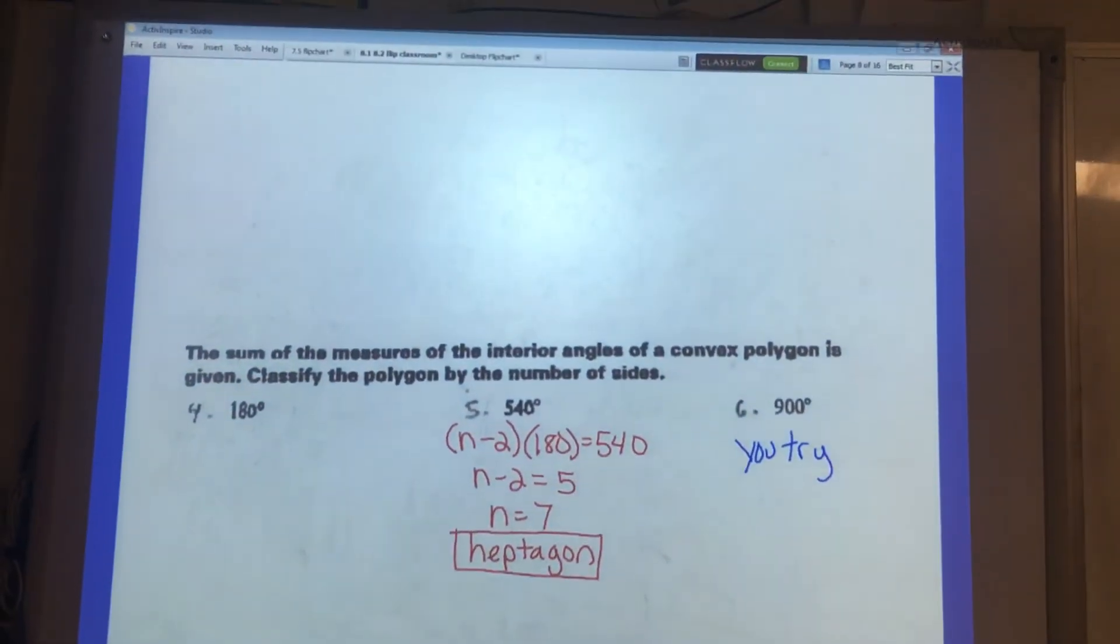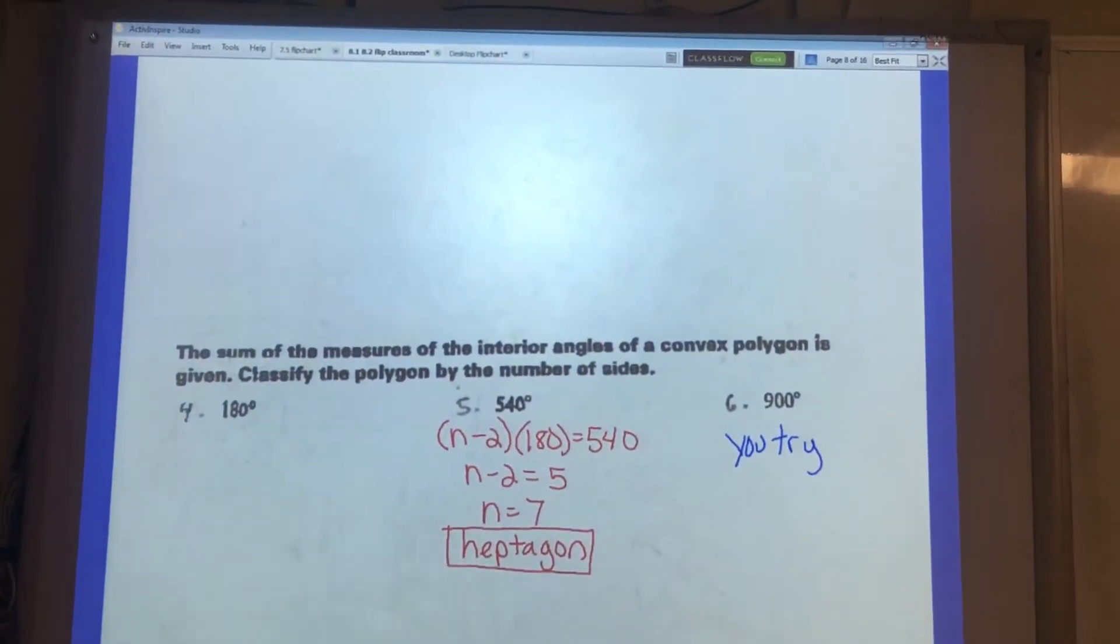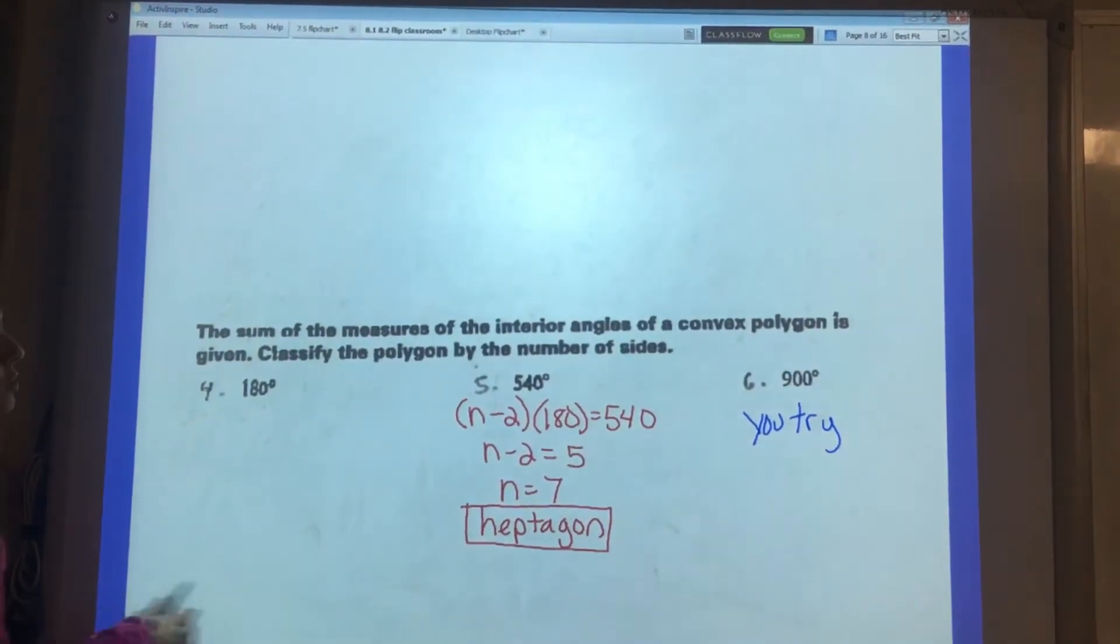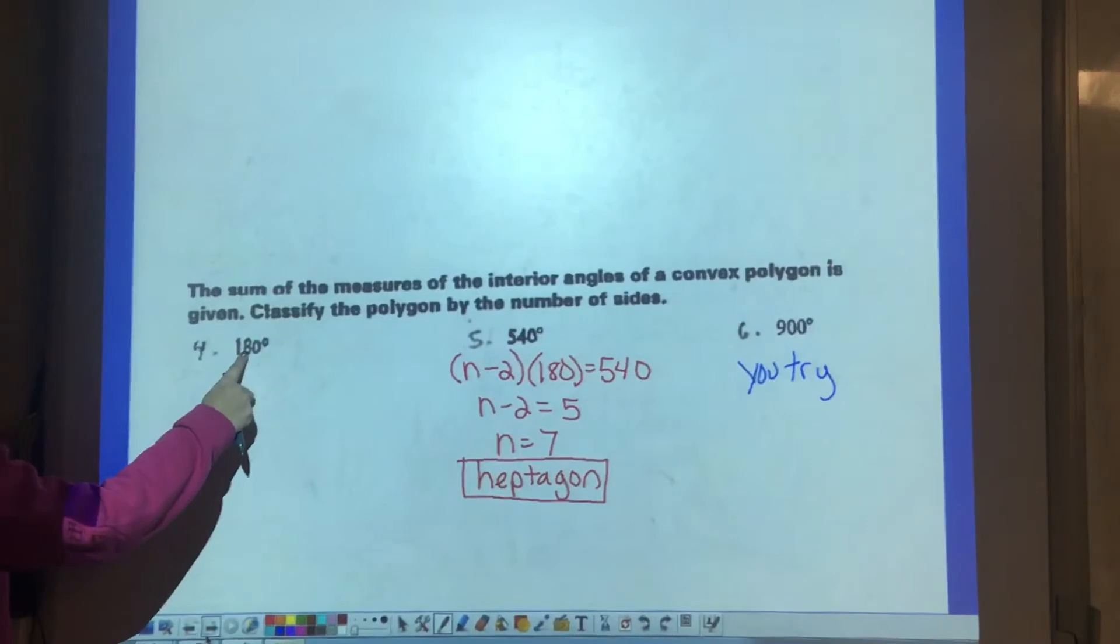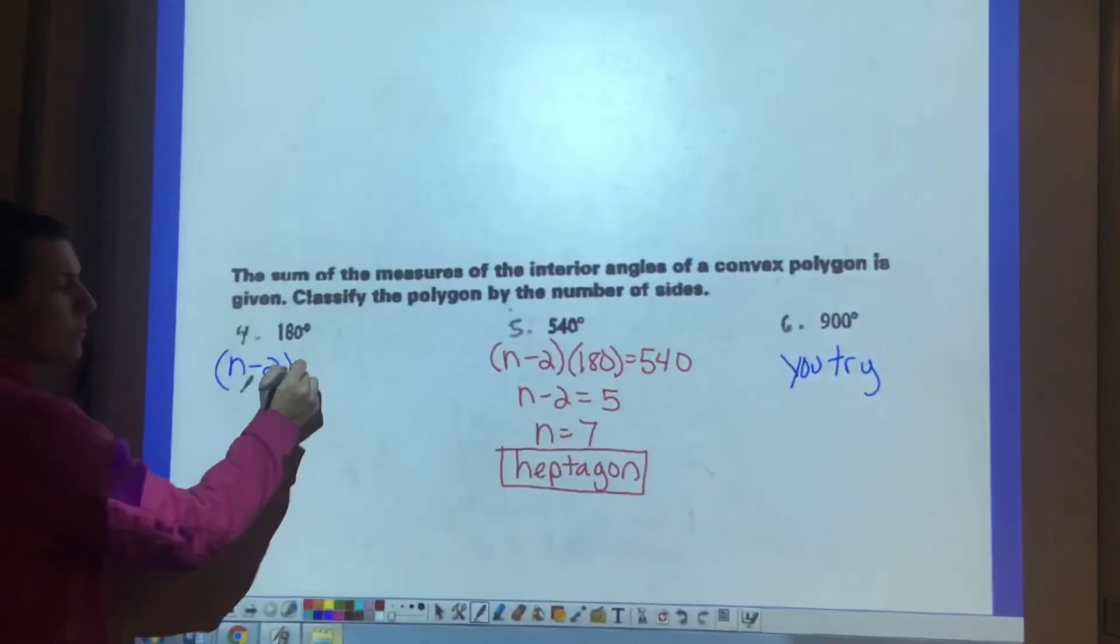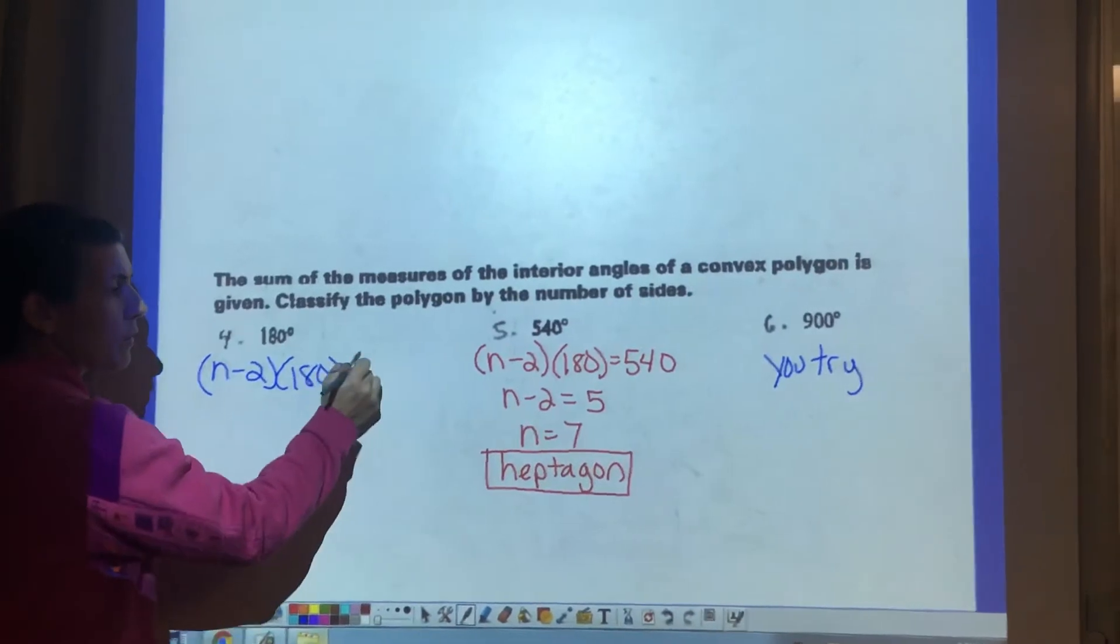Next section says the sum of the measures of interior angles of a convex polygon is given. Classify the polygon by the number of sides. We're working backwards for these problems. So we already know that the sum is 180 and this is an easier problem. We're using the formula like we've always done, plug in what you know and solve for what you don't know.